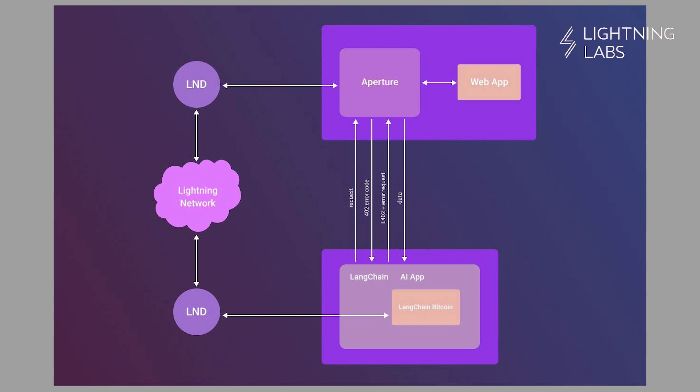I've set this up via a Replit REPL. I'm using the Langchain Bitcoin tools, working with Langchain and the OpenAI API. I am then using my newly Bitcoin aware agent, connected to my LND node, to go buy some data from another server that's running Aperture and making use of L402s. So, let's dive into it and we'll discuss all these tools as we go.